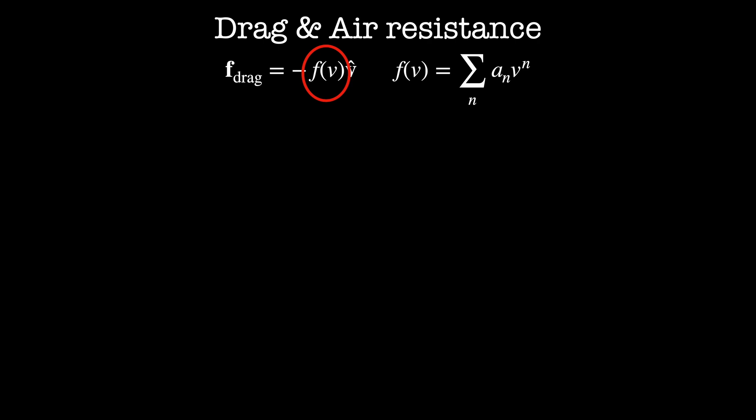We're just going to Taylor-expand the force for small velocities. This gives us a power series in terms of velocity. For now, let's keep the two lowest terms: a linear term, f-linear, and a quadratic term, f-quad.